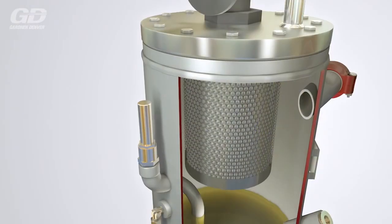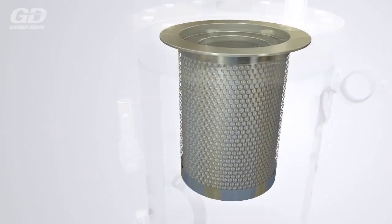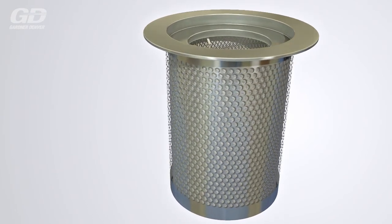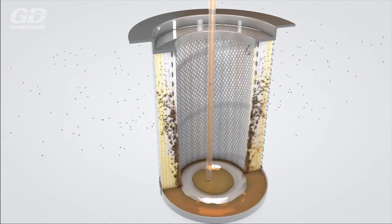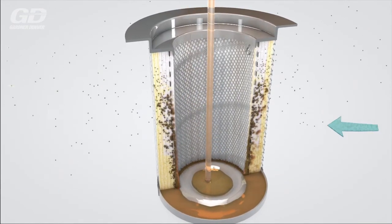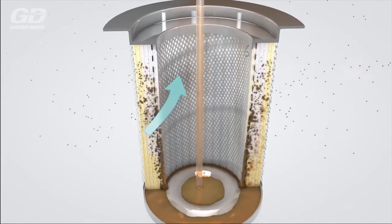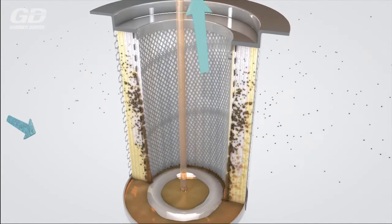In order to achieve a residual oil content of one to three parts per million, a further separation process is necessary. Therefore, the oily air now flows through the air oil separator. In the layers of filter media, many smaller oil droplets are converted to larger oil drops through the coalescing effect and then sink to the bottom of the filter.